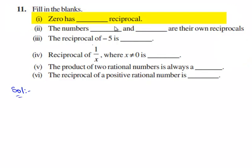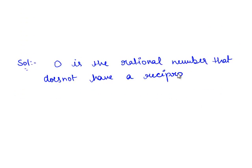Zero has no reciprocal. Zero has no reciprocal because there is no rational number which when multiplied with 0 gives 1.